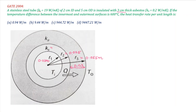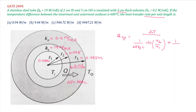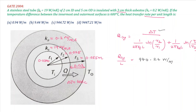With ΔT = 600°C and all data known, we calculate the heat transfer rate per unit length. The total resistance includes conduction resistance: ln(R2/R1) divided by 2πKL for each layer. Substituting the values and calculating, the answer matches option C. Answer C is the correct answer.